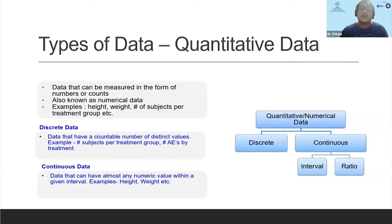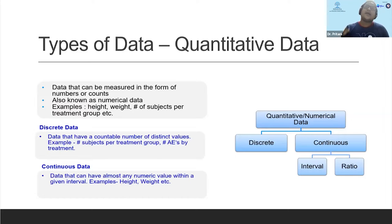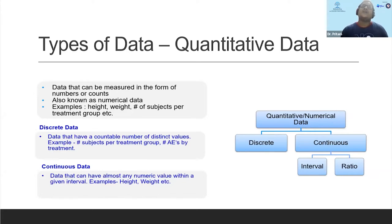Continuous data can take any numeric value within a given interval. For example, height — if I'm doing a study on Indian subjects, I would anticipate height would be somewhere between four feet ten inches to six feet two inches, and between these values the subject's height can be anything: five feet one, five feet 1.5, five feet 1.666 — any possible value within a given interval. Similarly for weight, if conducting a study for adults, the weight might vary between 60 to 100, and between 60 and 100 the subject's weight can be any value including values with a decimal point. That's the differentiation between continuous and discrete data.